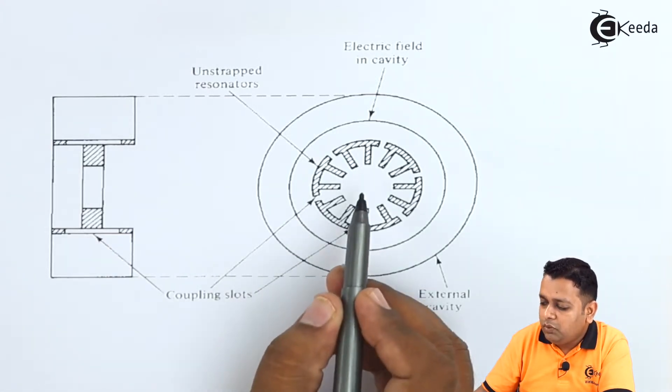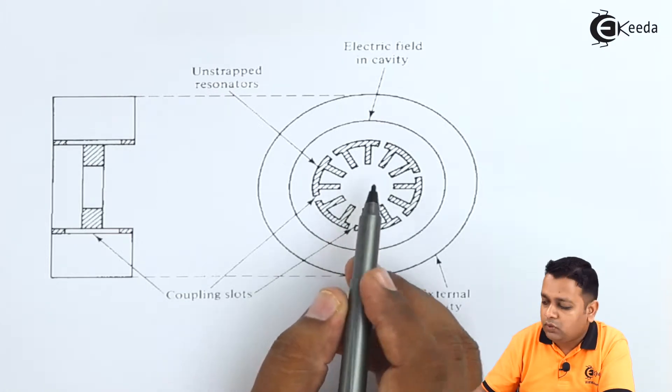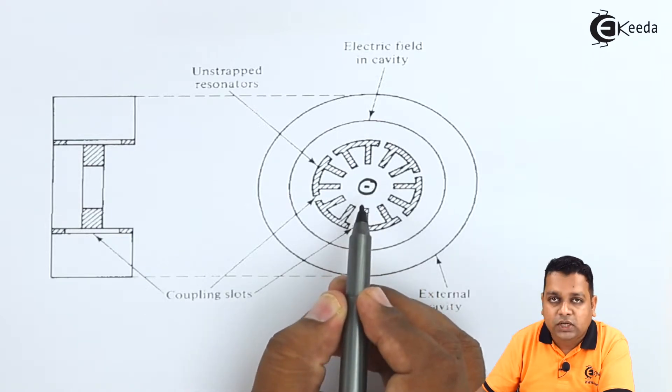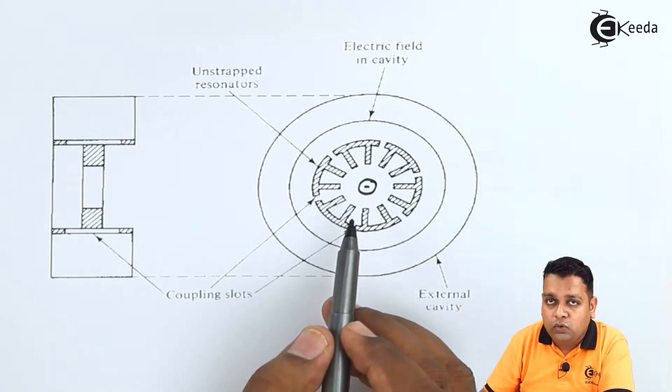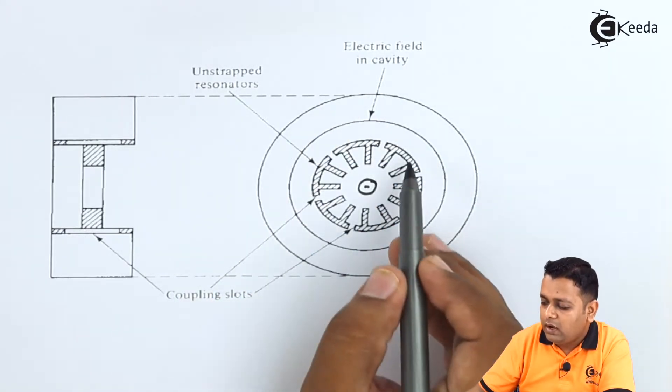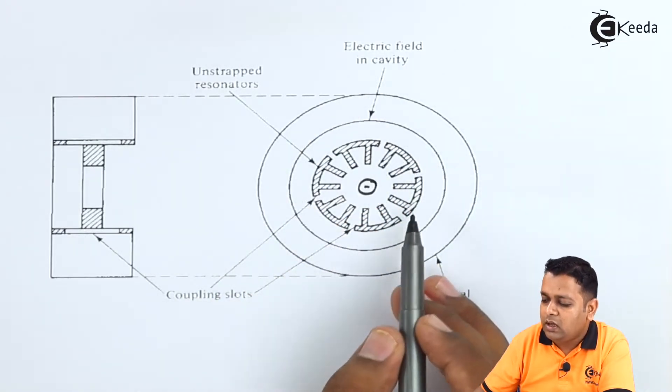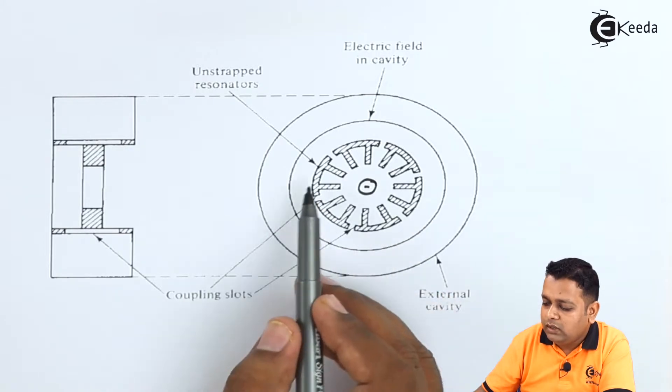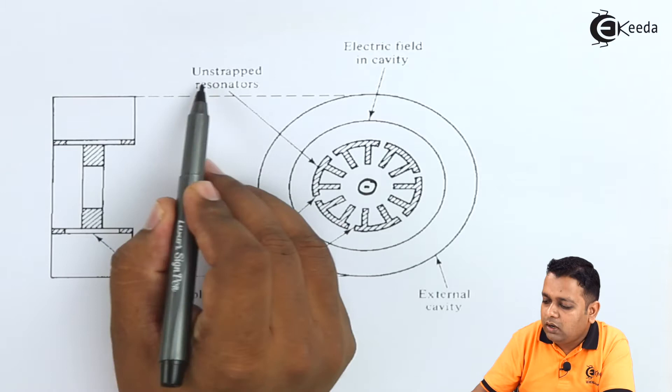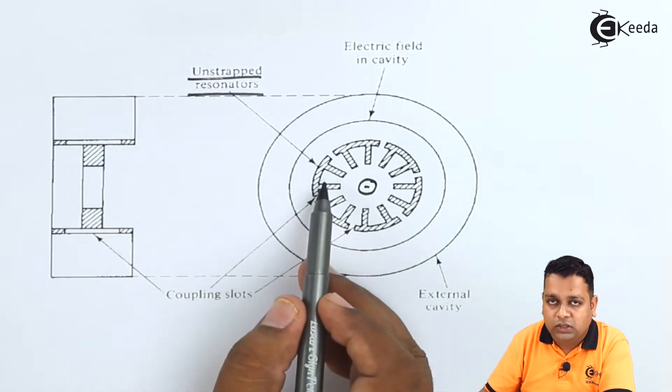So there will be a centrally placed cathode here, I can draw it like this and it will be negatively charged. And now the anode body will be consisting of the outer cylinder and inside to this outer cylinder, there will be the n number of resonant structures here. So this is the unstrapped resonators that we show here.